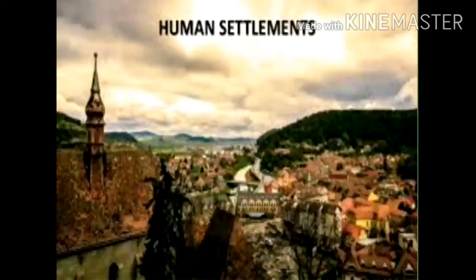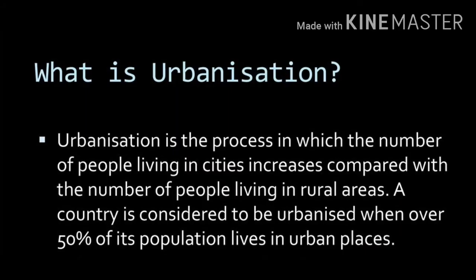Hello students, and welcome back to the continuing part of Geography chapter number 7, Human Settlement. In the first part we learned about human settlements, the types of human settlements, and the patterns of settlement in India and Brazil. In the second part, we are going to learn about urbanization in India and Brazil. Urbanization is a process in which the number of people in cities increases compared to the number of people in rural areas. A country is considered urbanized when over 50% of its population lives in urban places.